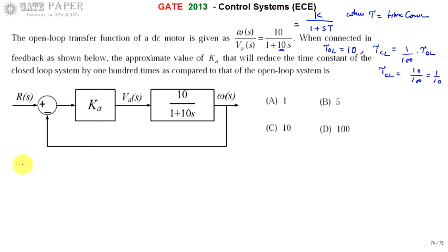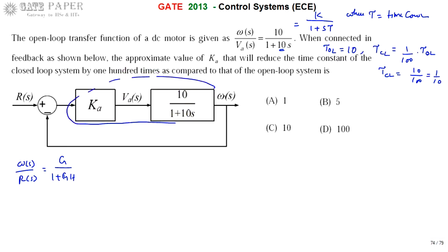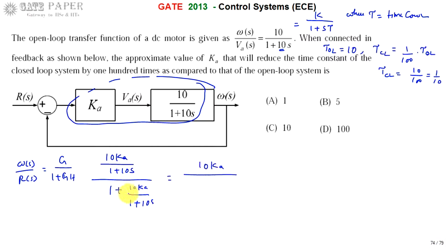Write the closed-loop transfer function ω(s)/R(s) = G/(1 + GH). Here G is the product of Ka and 10/(1 + 10s), which is the forward path transfer function. This gives 10·Ka divided by (1 + 10s), all divided by 1 plus that same term, simplifying to 10·Ka divided by (1 + 10s + 10·Ka).